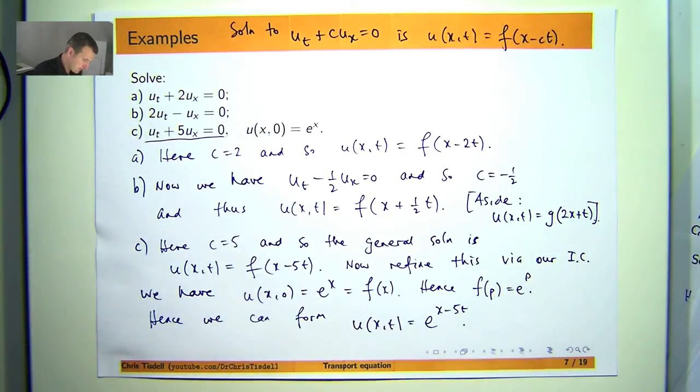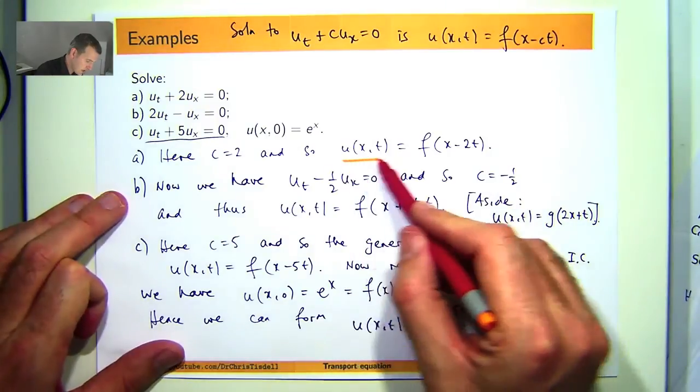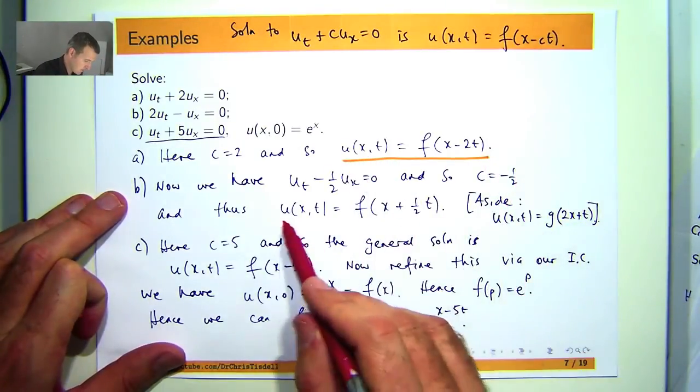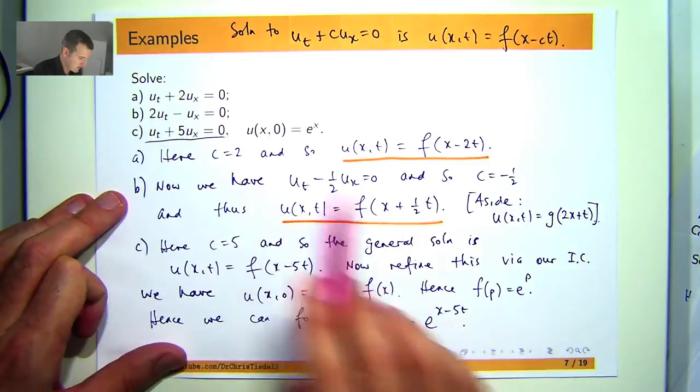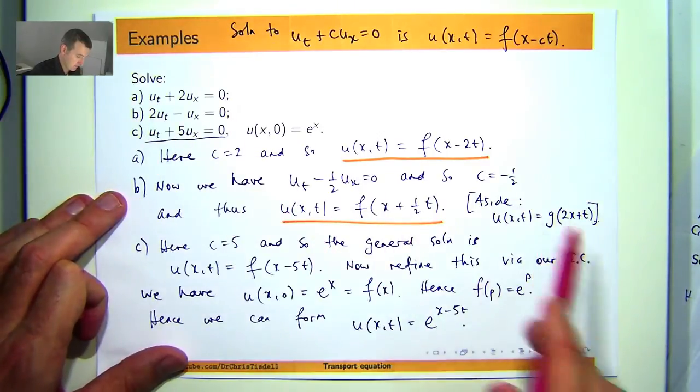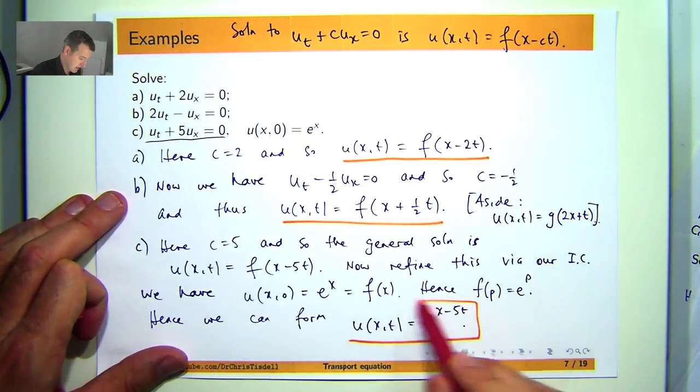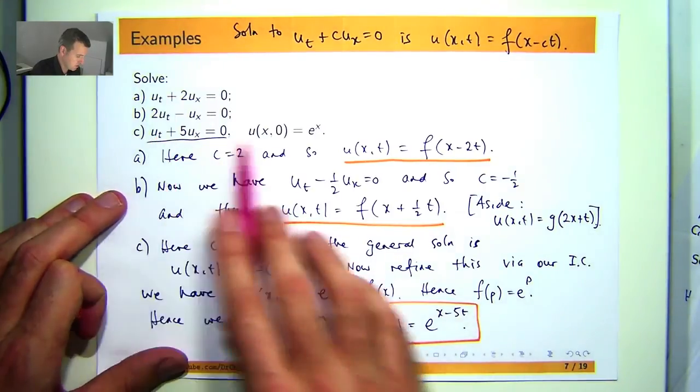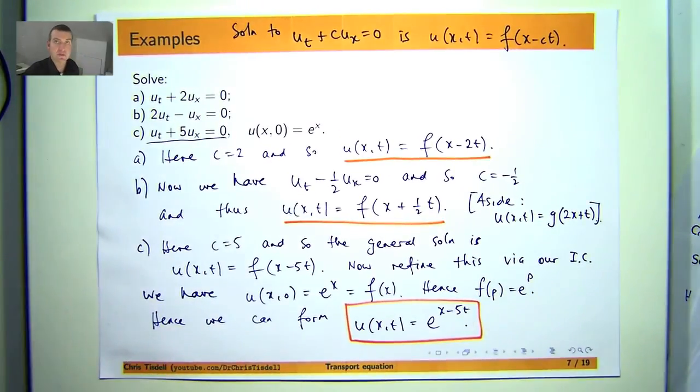So again it's always good to check your answers just using the chain rule here. This should be a solution to A, this should be a solution to B, or this if you want, and this should be a solution to my Cauchy problem. So there are some basic examples.